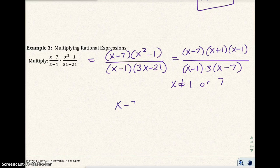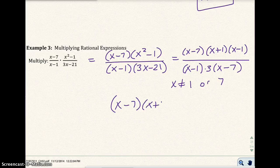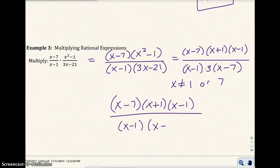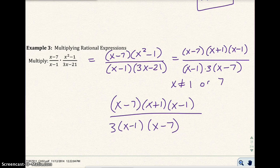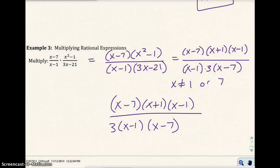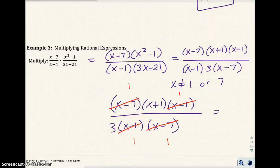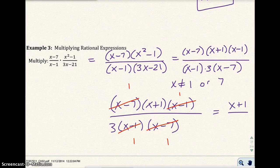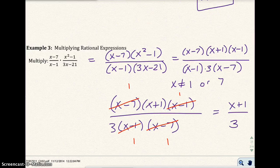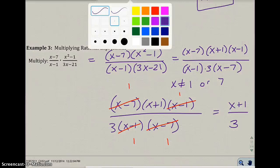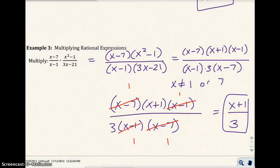And then I'm going to go ahead and copy this. I have x minus 7, x plus 1, x minus 1, x minus 1, x minus 7. Now I'm going to put the 3 out here in front. Remember, order doesn't matter when you multiply. So now I'm going to go ahead and cross out common factors. This is a common factor with this. This one is a common factor with this. And so my final answer looks like it's going to be x plus 1 over 3 on the bottom.